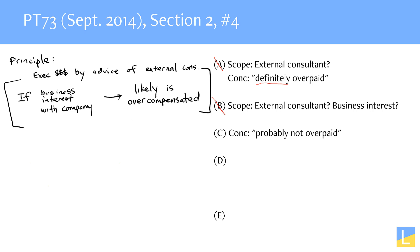If you have a good understanding of conditional logic, you should be able to get rid of answer choice C very quickly just from the very first two lines, because the conclusion is that the executive is probably not overpaid. But all we can conclude is that the executive likely is overpaid. We could never conclude the negation of the necessary condition — we can never conclude the negation of the right side of a conditional arrow. So C should be out without even needing to read the rest of the answer choice.